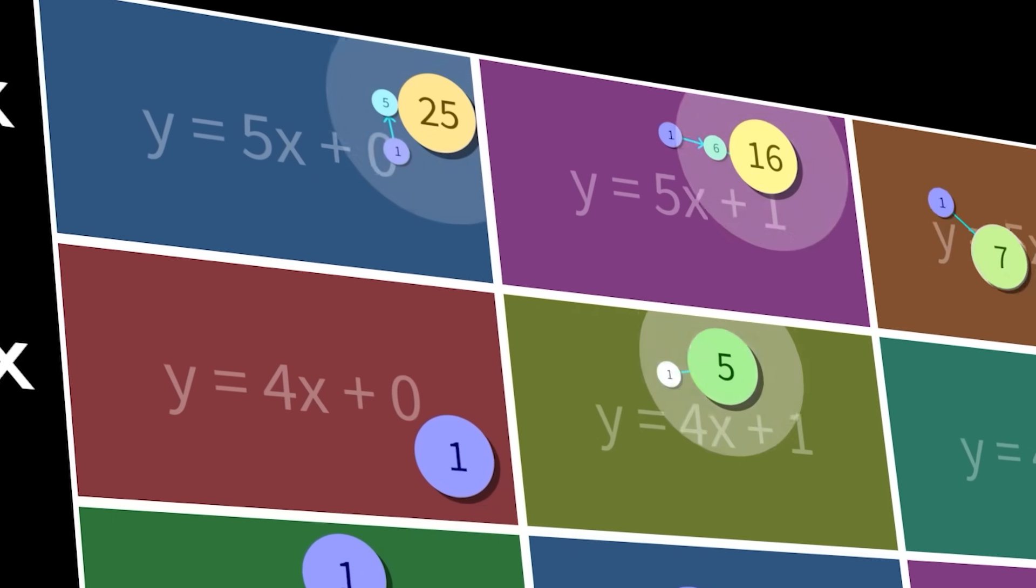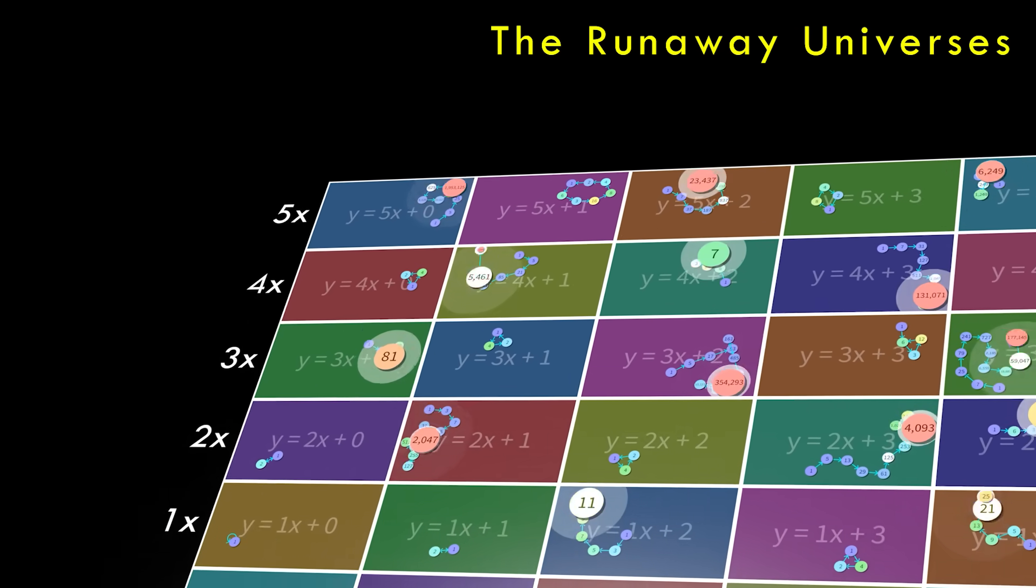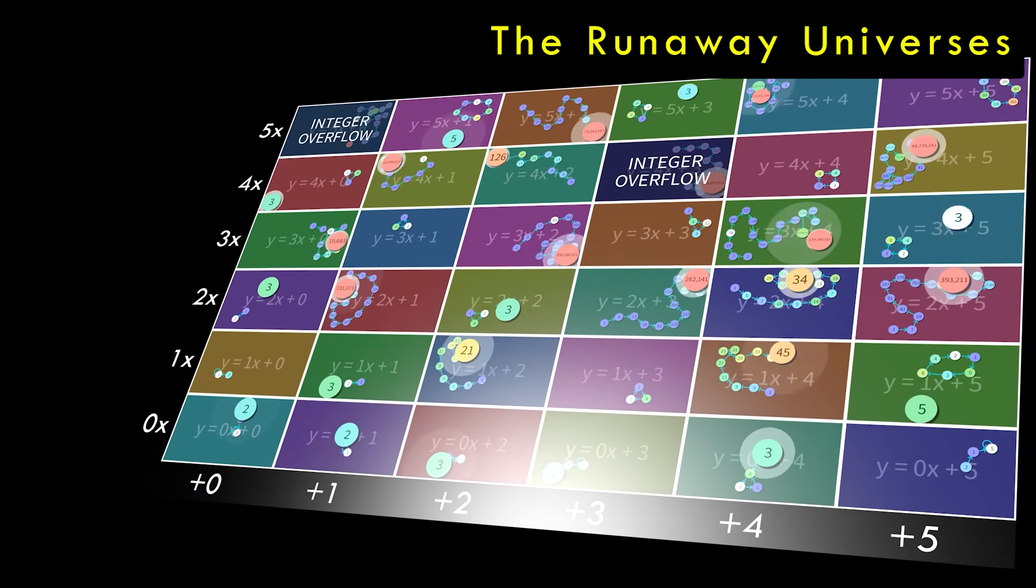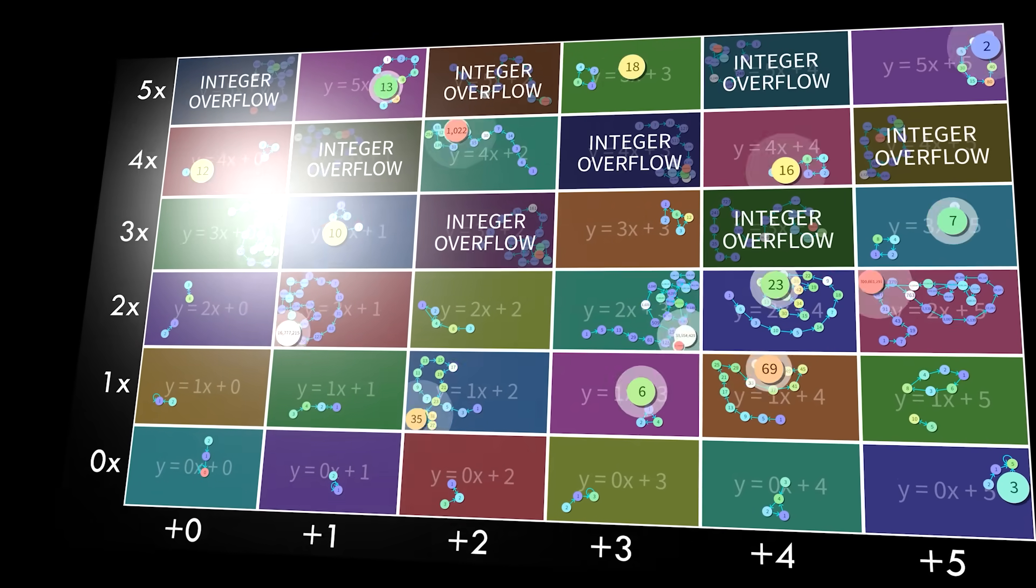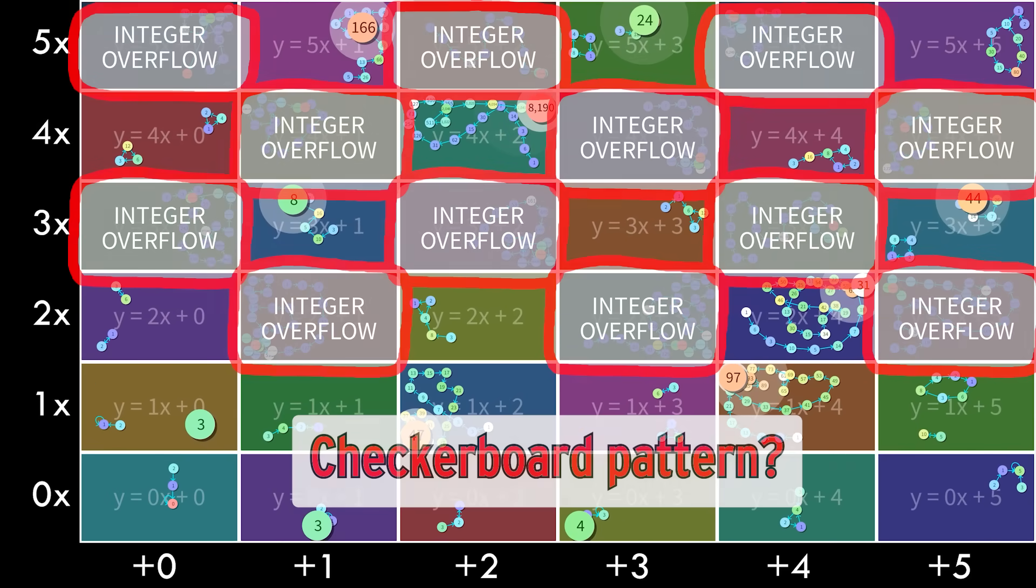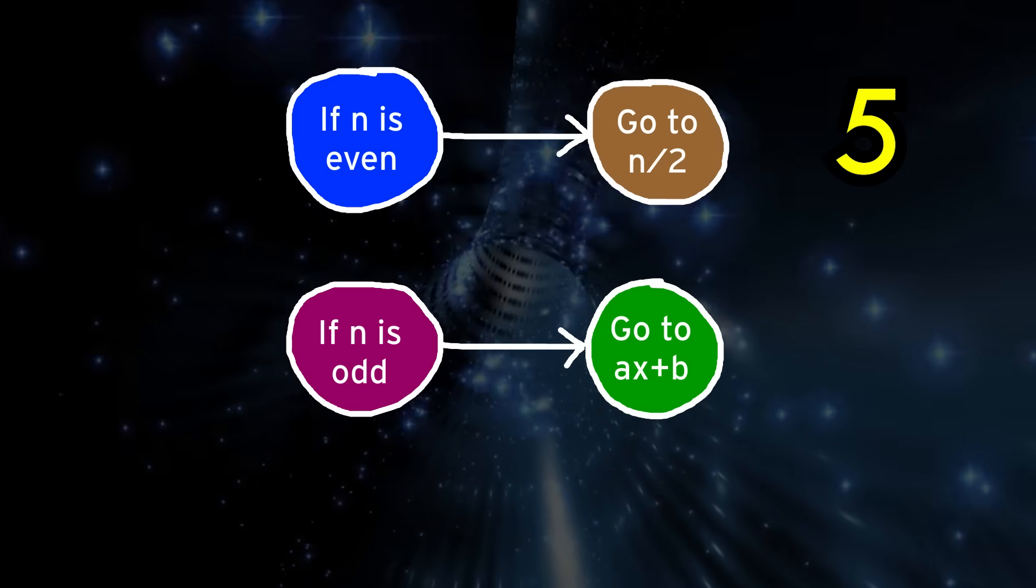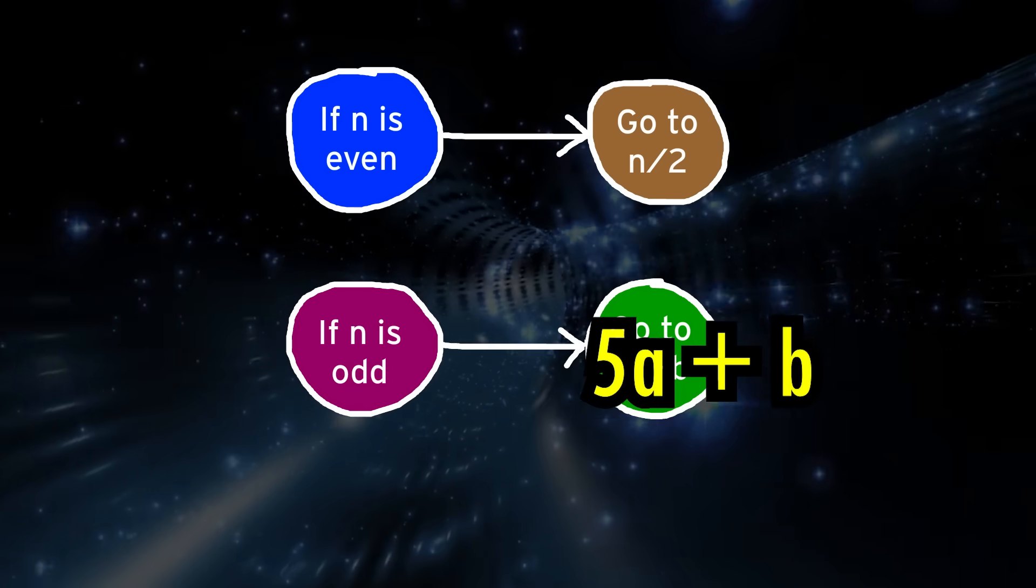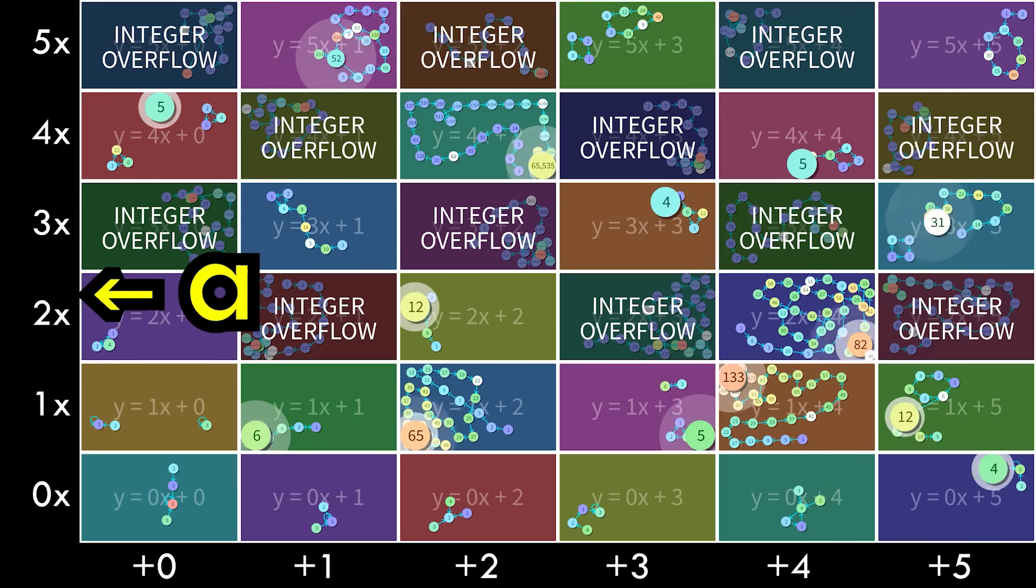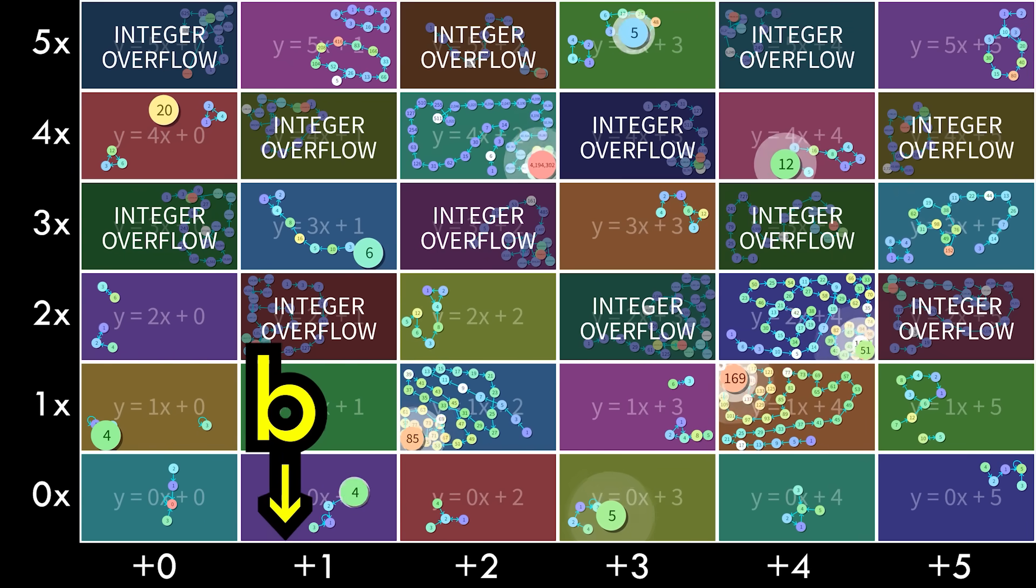But that brings me to the next stop on our Collatz Tour, the universes that quickly run away to infinity. When we watch everything play out, why does it seem like the runaways form a checkerboard pattern? Well, in every universe, even numbers always decrease to their half, and odd numbers always increase to ax plus b, where a is the number on the y-axis and b is the number on the x-axis.